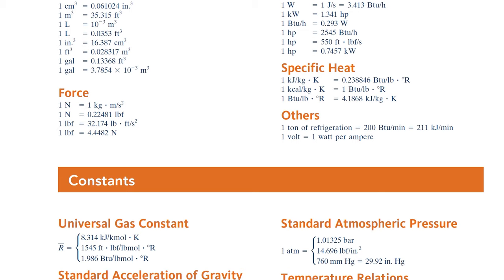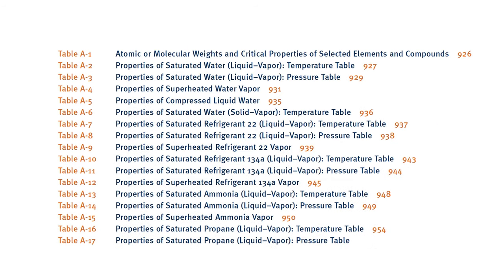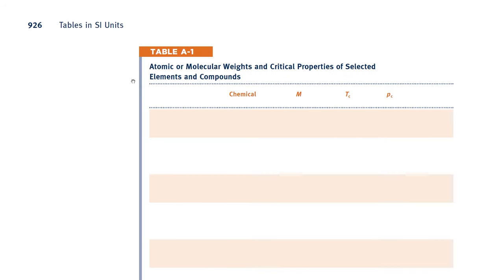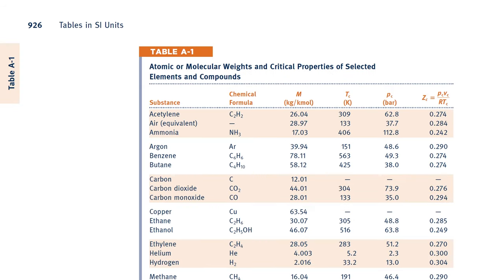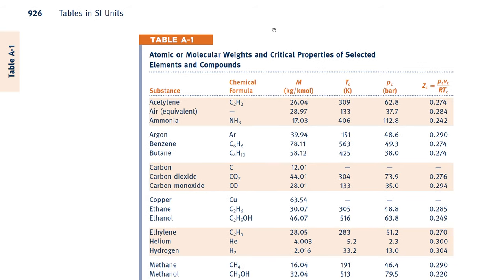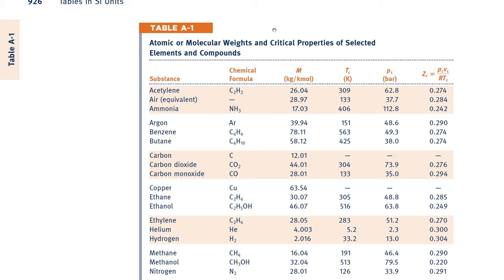For that molar mass, I'm going to be going to table A1 because remember, when you would use your periodic table, you want steak sauce or whatever it is that you use to remember which table is which. On table 1, I can see that the molar mass for nitrogen is 28.01 kilograms per kilomole.